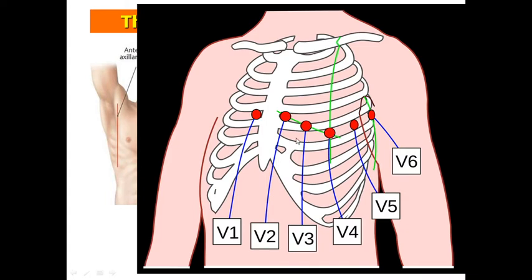How do we place the chest electrodes? First, V1 — we place it on the fourth intercostal space on the right side of the sternum. On the fourth intercostal space on the left side of the sternum, we place the V2 electrode. V4 electrode we place on the mid-clavicular line at the fifth intercostal space. And then, between V2 and V4 on the diagonal between them, we place the V3 electrode on the para-sternal line.